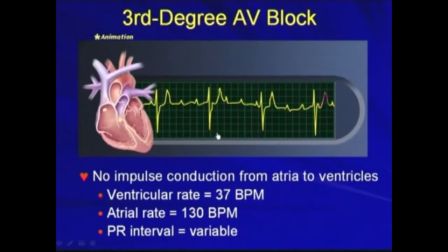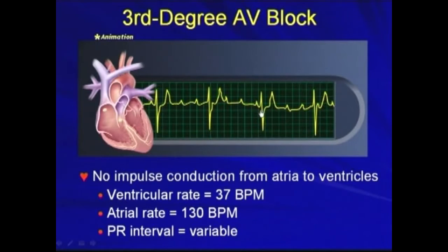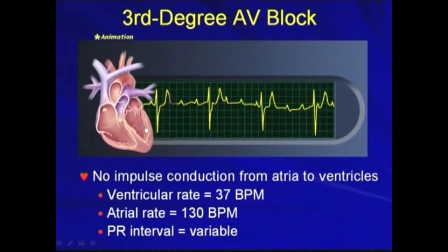Here the ventricular rate is only around 37 beats per minute, while the atrial rate is actually 130 beats per minute. The PR interval is variable because there's no relation between the P wave and the QRS complex, as there's a complete block in the AV node — so it's a complete dissociation.